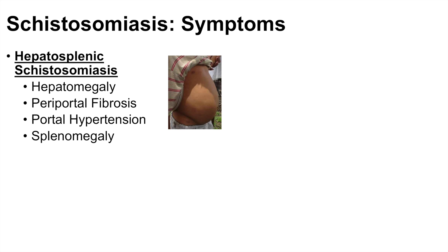Some other symptoms of schistosomiasis are related to the hepatosplenic system. The worms can migrate to the portal system of the liver, leading to hepatomegaly, periportal fibrosis, and portal hypertension. The portal hypertension is due to an accumulation of parasites within the portal system, leading to increased portal pressure. This can then lead to splenomegaly due to a backup of venous return into the spleen — we call this hepatosplenic schistosomiasis.